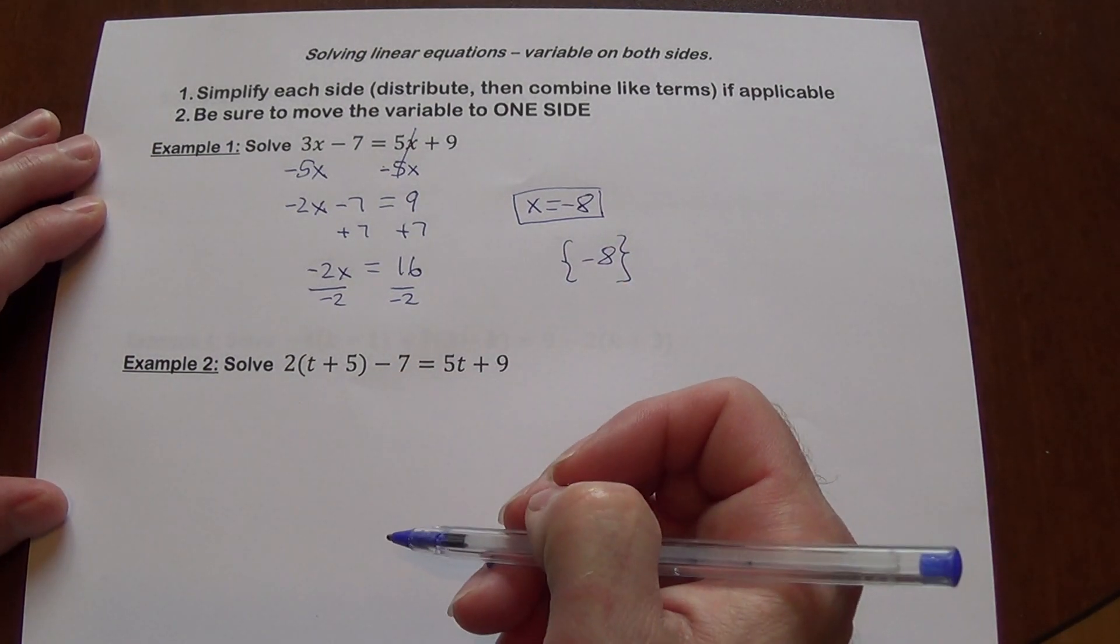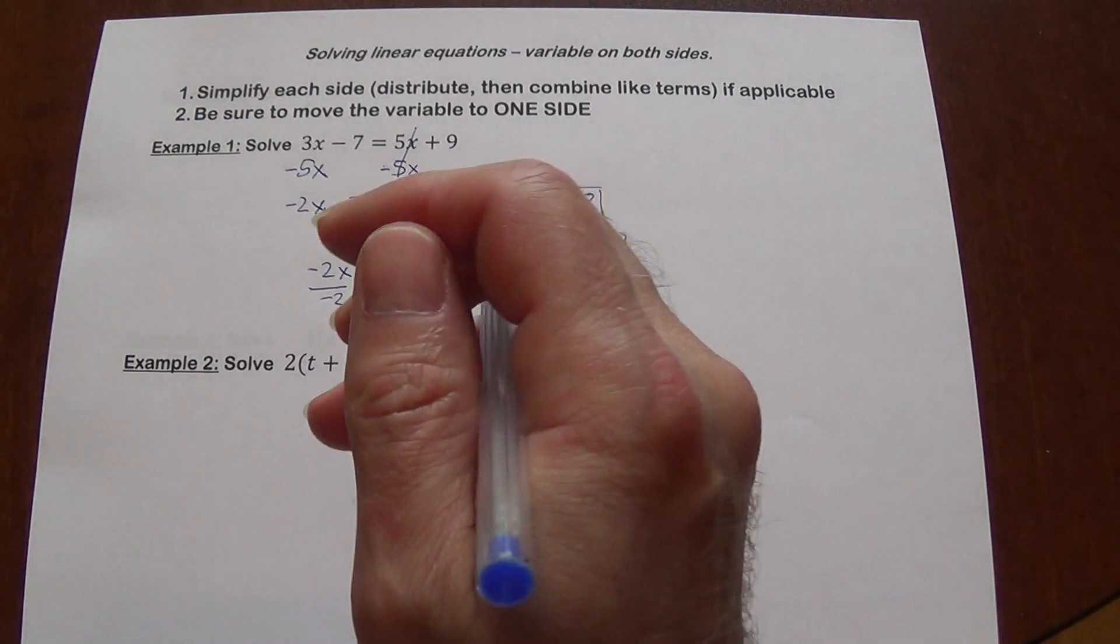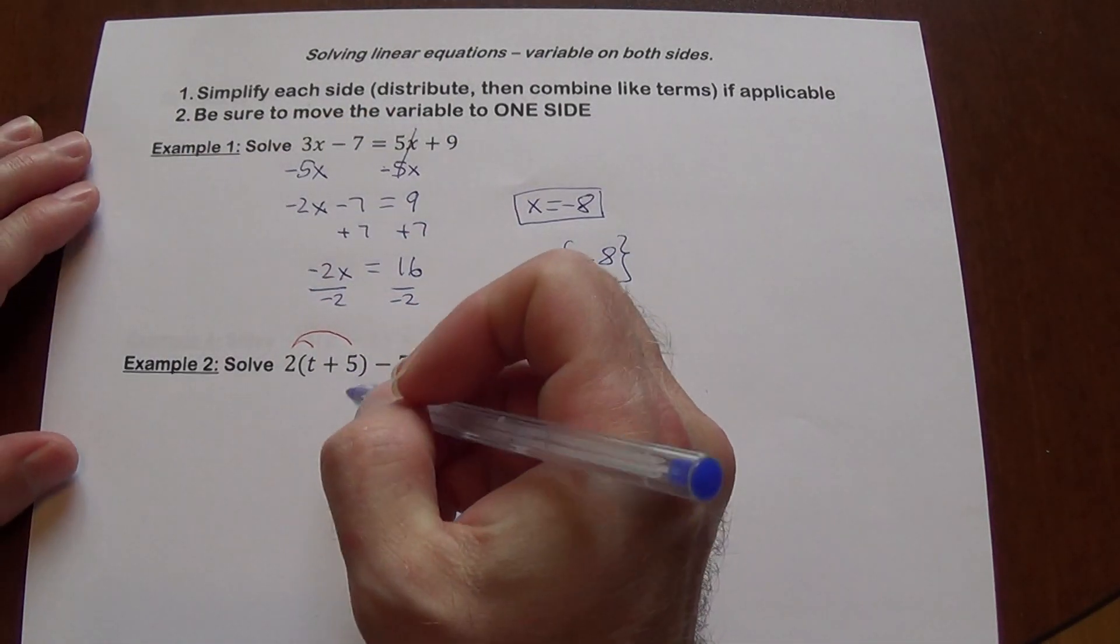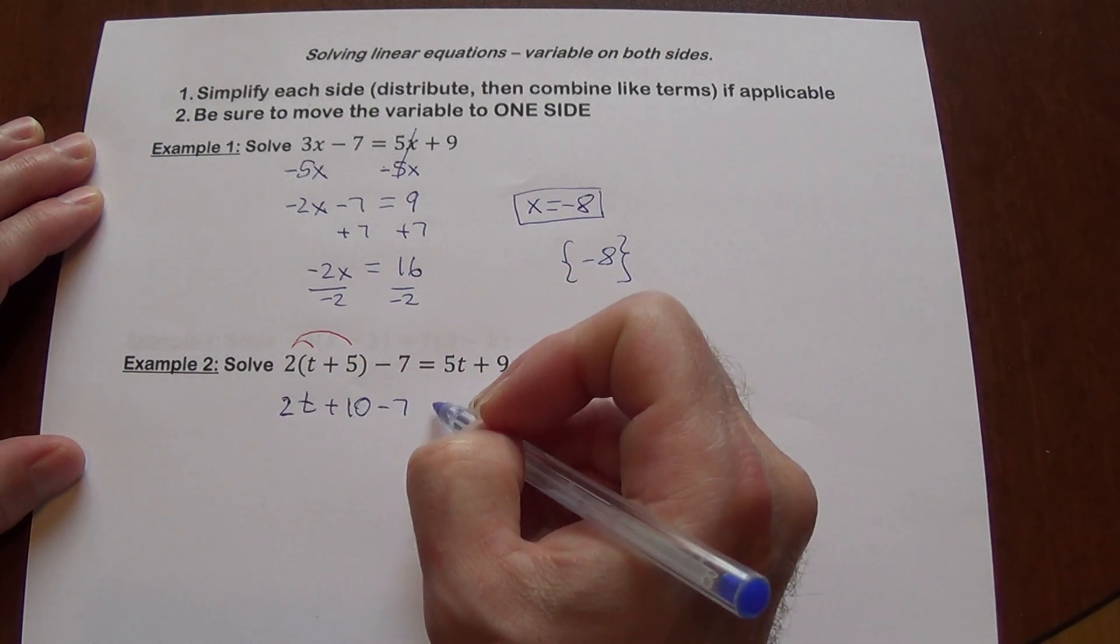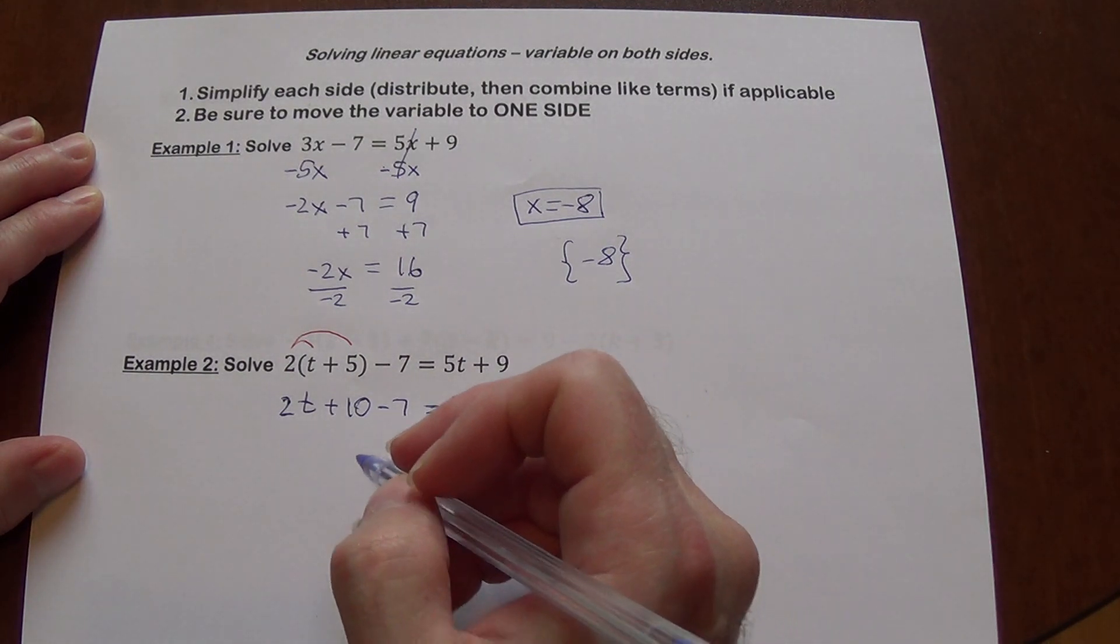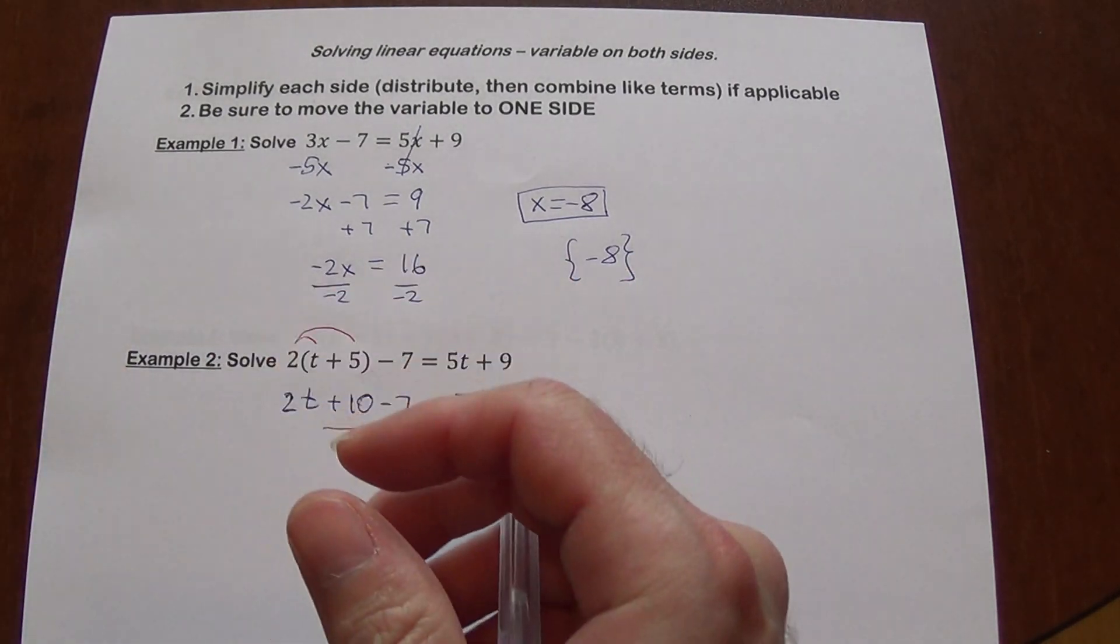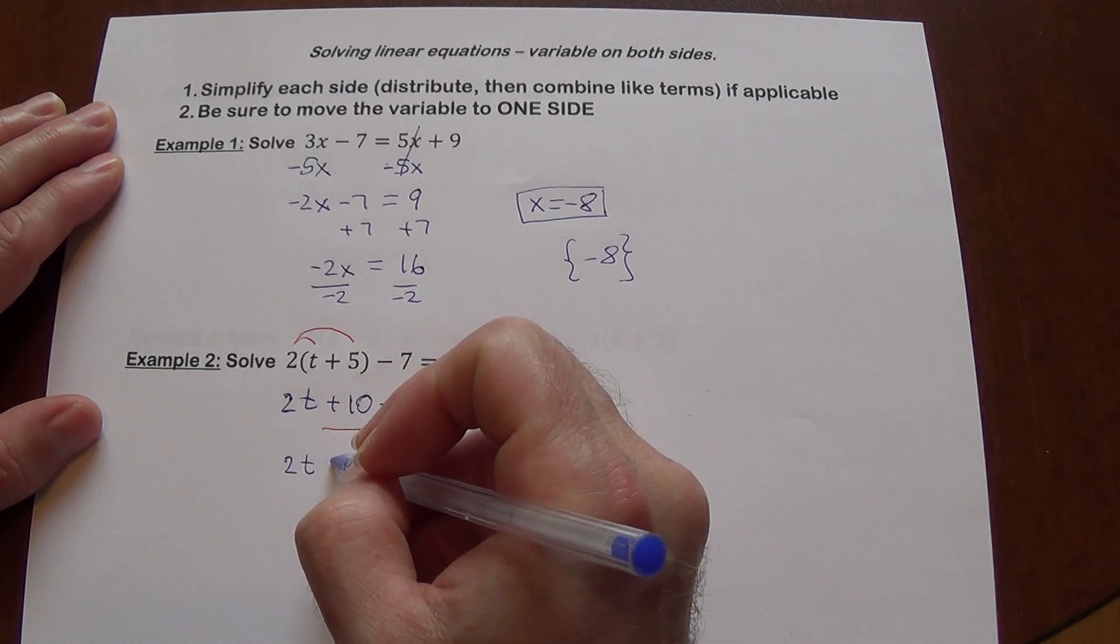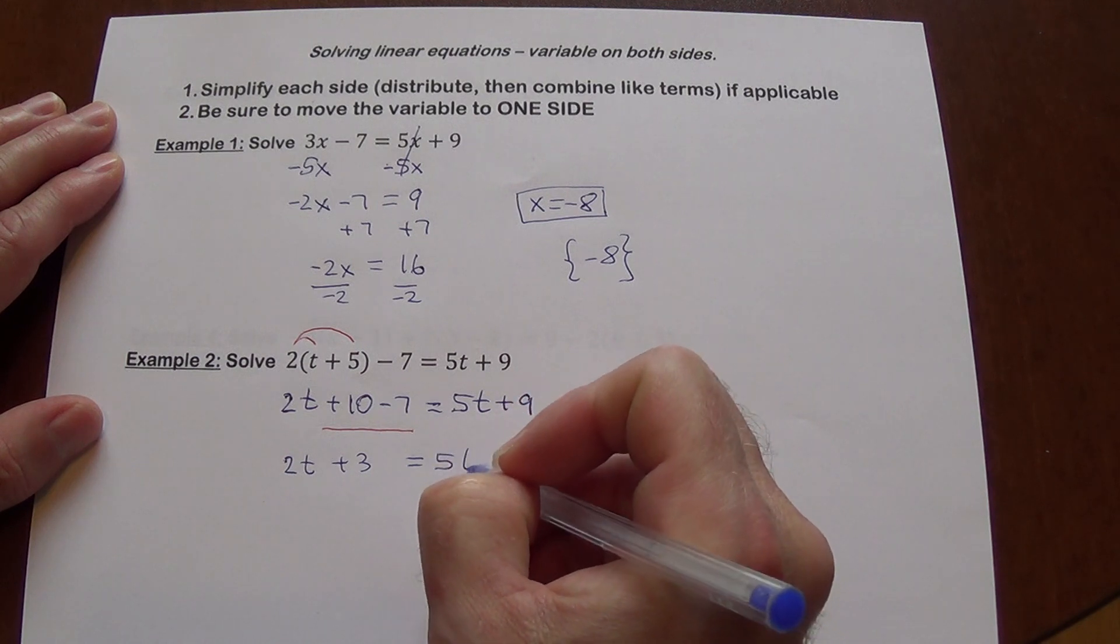This equation here has a little bit more involved. You probably notice that right there you will have to distribute. So I want to remind you about the distributive property. So 2 times t is 2t, 2 times 5 is 10, still minus 7, and still 5t plus 9 on the other side. Please note right here, these two terms are like terms and they should be combined before you proceed. 2t positive 10 minus 7 is positive 3 equals 5t plus 9.